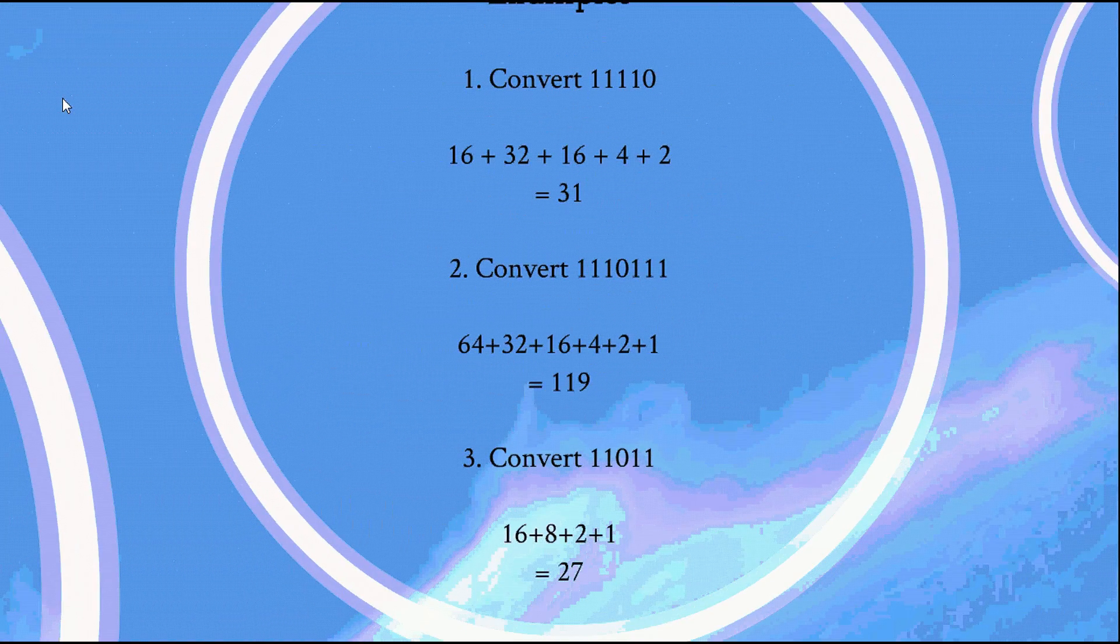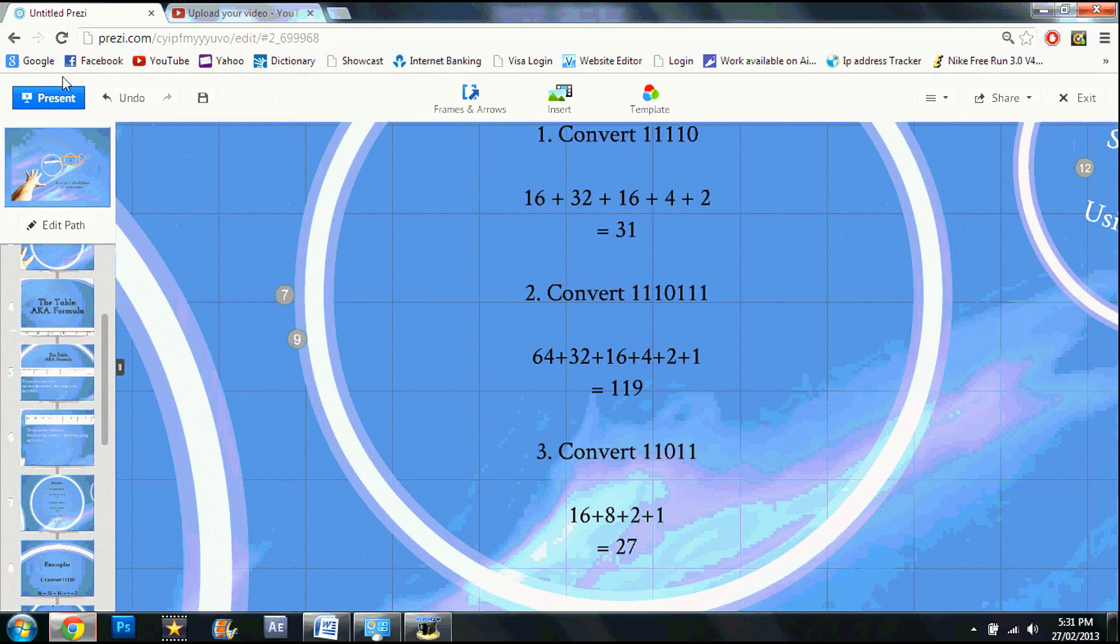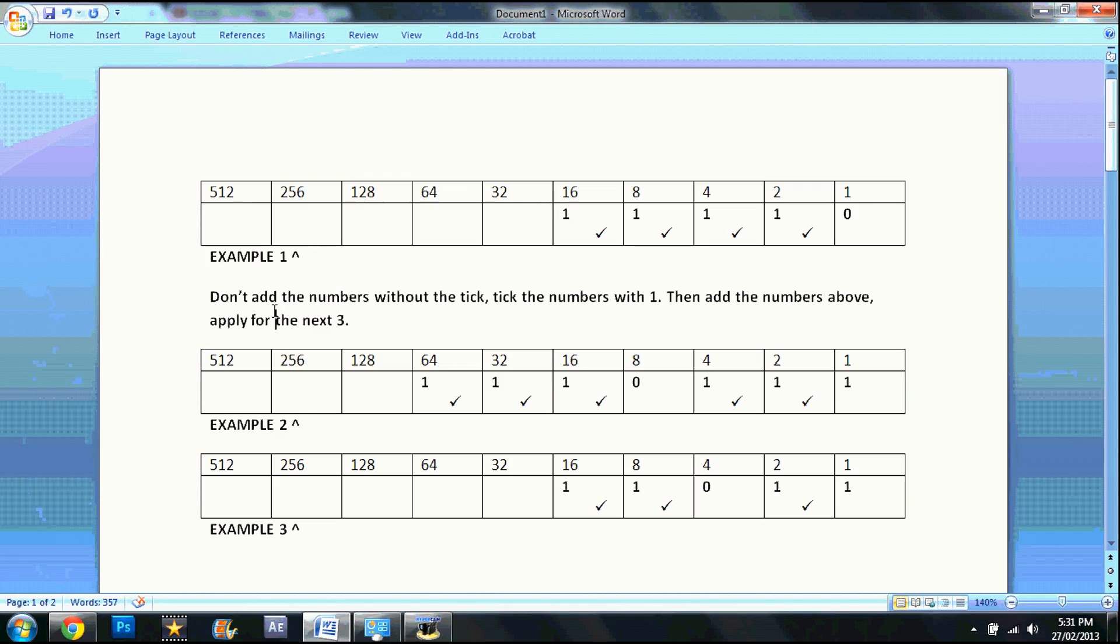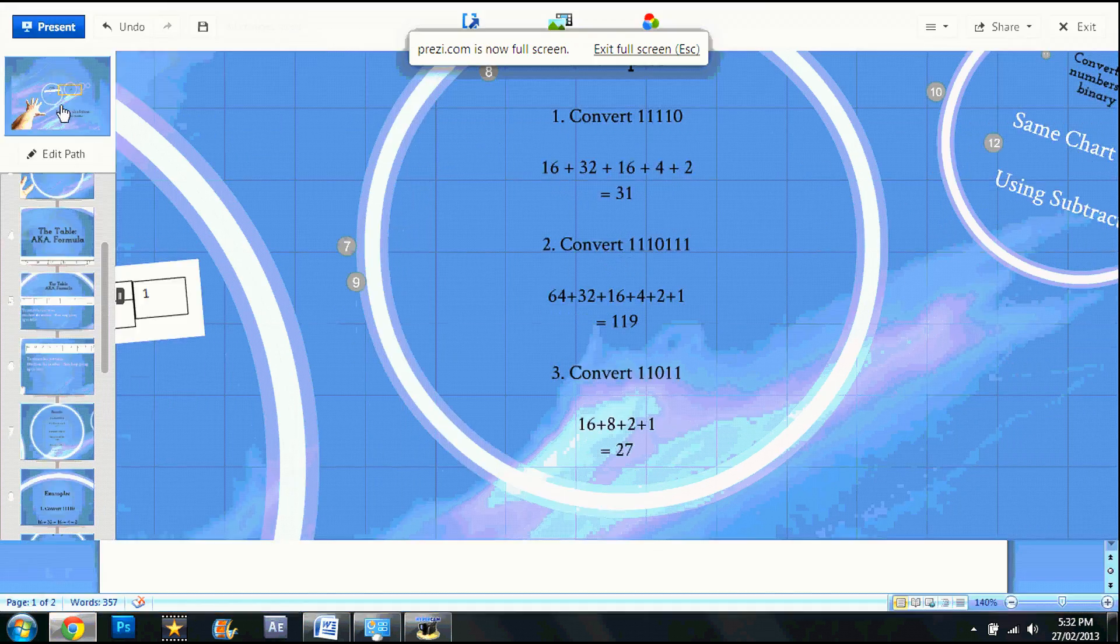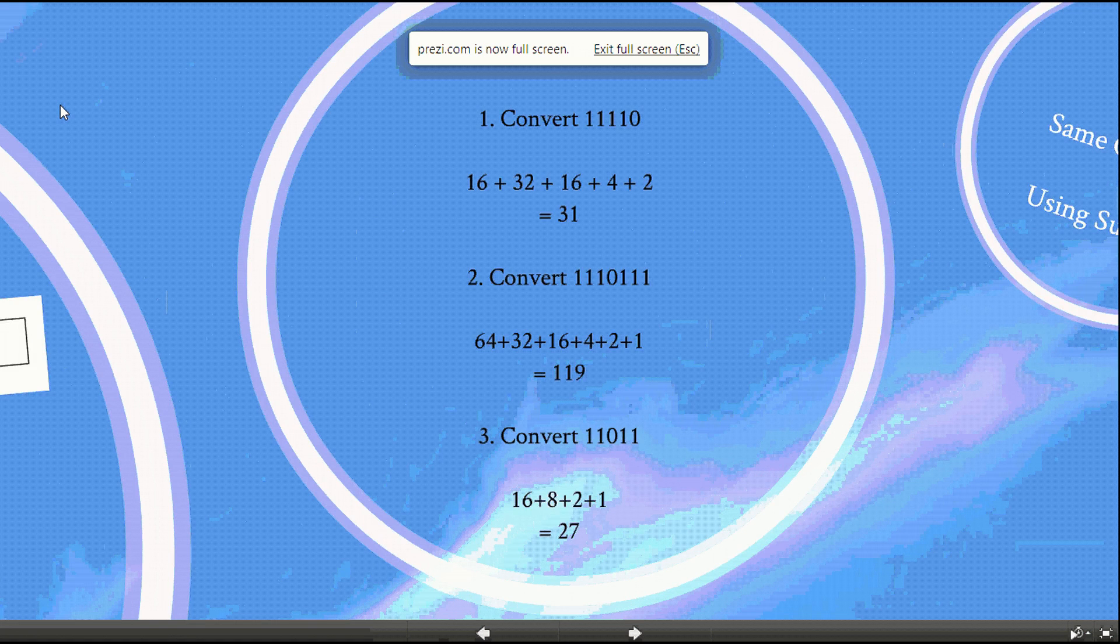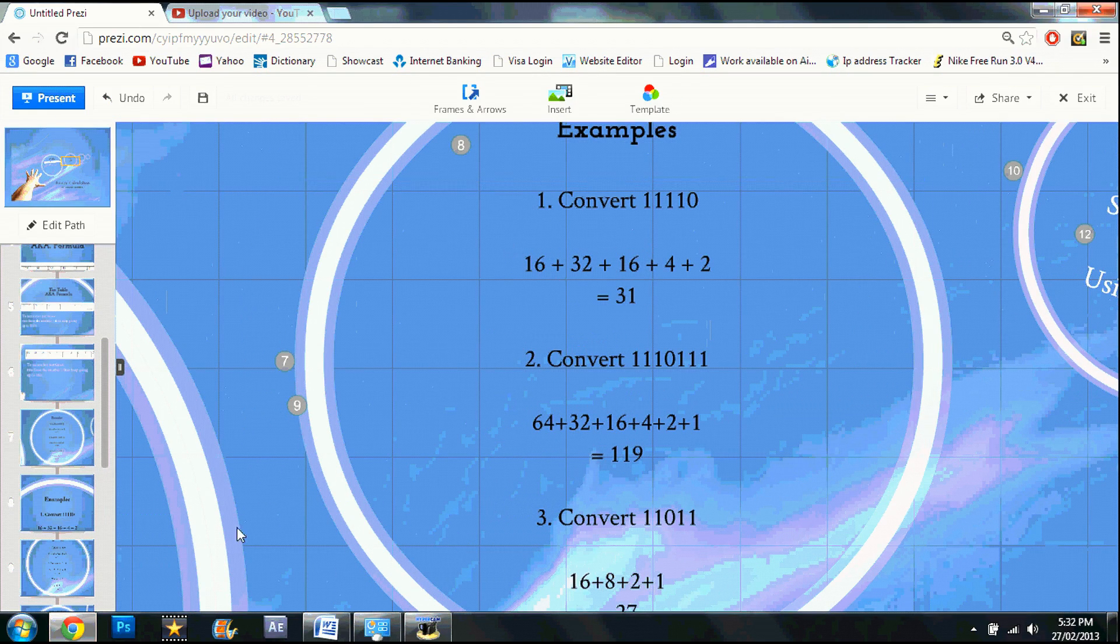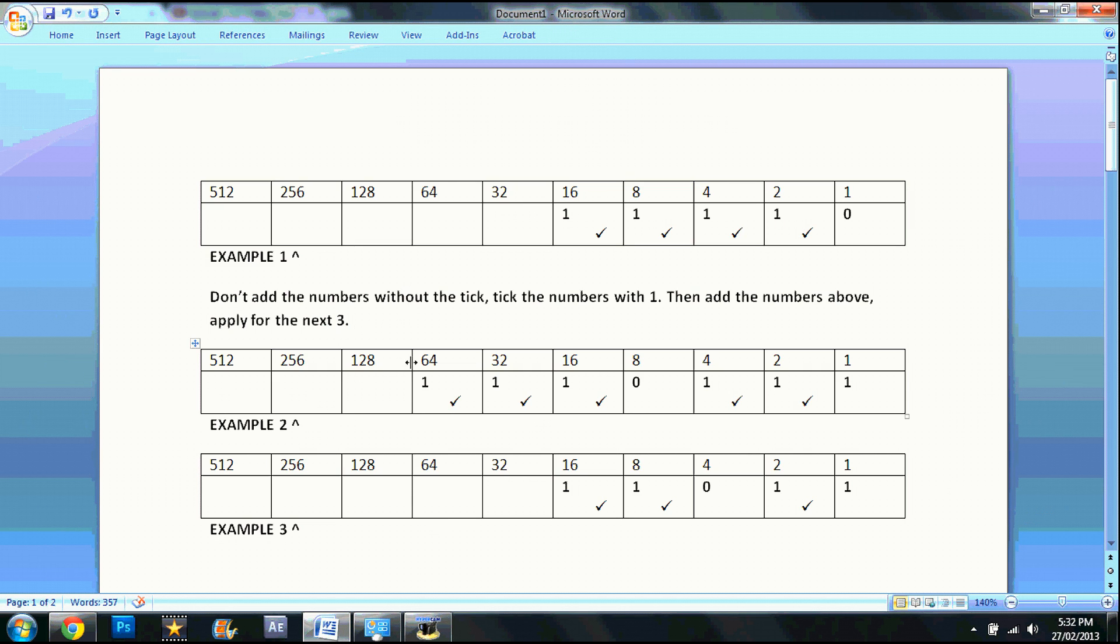Example: convert 11110. Let's go to our Word document. Don't add the numbers without the tick, tick the numbers with one, then add the numbers above. Apply the next three to the three next questions. So you put the number in the chart 0 1 1 1 1, tick the numbers with the 1, and then you look above.